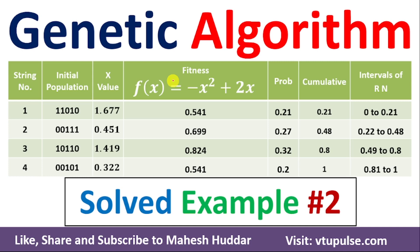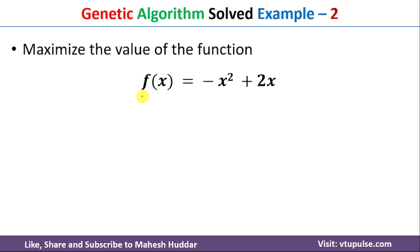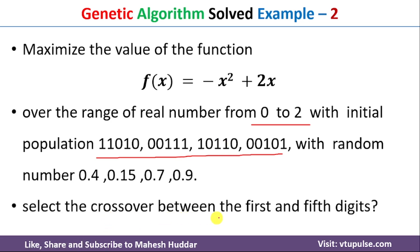Welcome back. In this video I will discuss how to use a genetic algorithm to maximize the value of a given function. This is solved example number 2; the link for other examples is given in the description. The function is f(x) = -x² + 2x, where x ranges from 0 to 2. The initial population has four chromosomes, random numbers are provided to select the best chromosome, and crossover points are at the first and fifth digit.